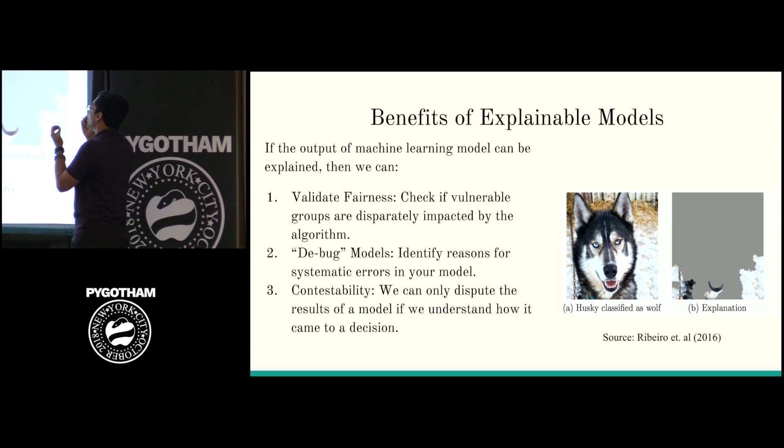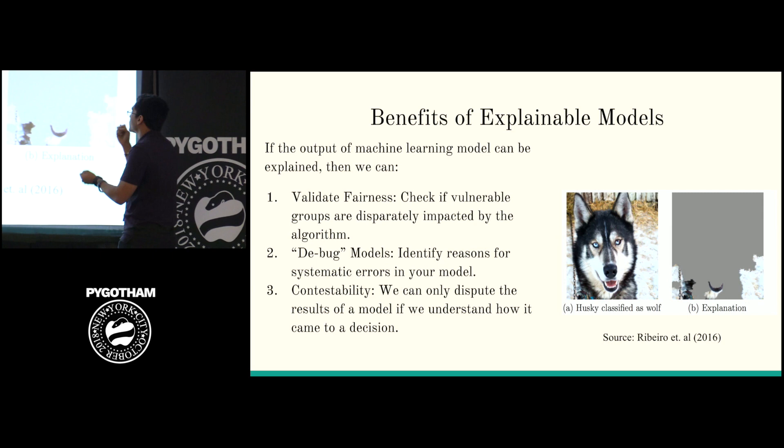You can run it through an interpretable model — an explainer. You can see that what made it think it was a wolf is because of all these patches of snow. It turns out that in the training of this neural network, all the pictures of wolves were in Arctic or snowy environments. The model learned: if there's snow, it's a wolf. So this model ends up being not a wolf-or-husky classifier — it's really a snow detector.